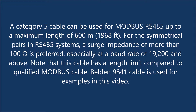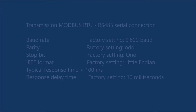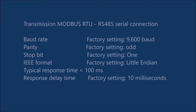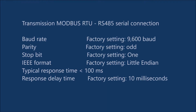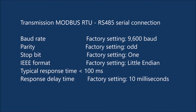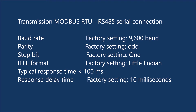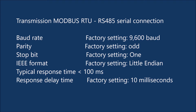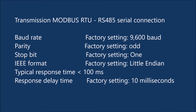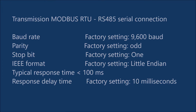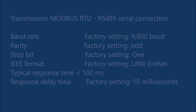Belden 9841 cable is used for examples in this video. Transmission: Modbus RTU RS-485 serial connection. Factory settings: baud rate 9,600 baud; parity — odd; stop bit — 1; IEEE format — little endian. Typical response time is less than 100 milliseconds. Response delay time factory setting: 10 milliseconds.